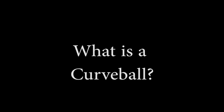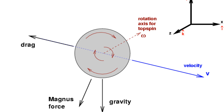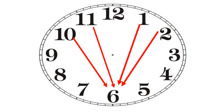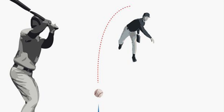I define a curveball by the vertical angle of the break and the rotation of the ball. We hear the term '12-6 curveball' — that means we want the ball to consistently change planes going from an imaginary clock at 12 o'clock down to 6. Not everybody throws from a 12 o'clock arm slot, and that's fine, as long as we get as close to 6 as we can.